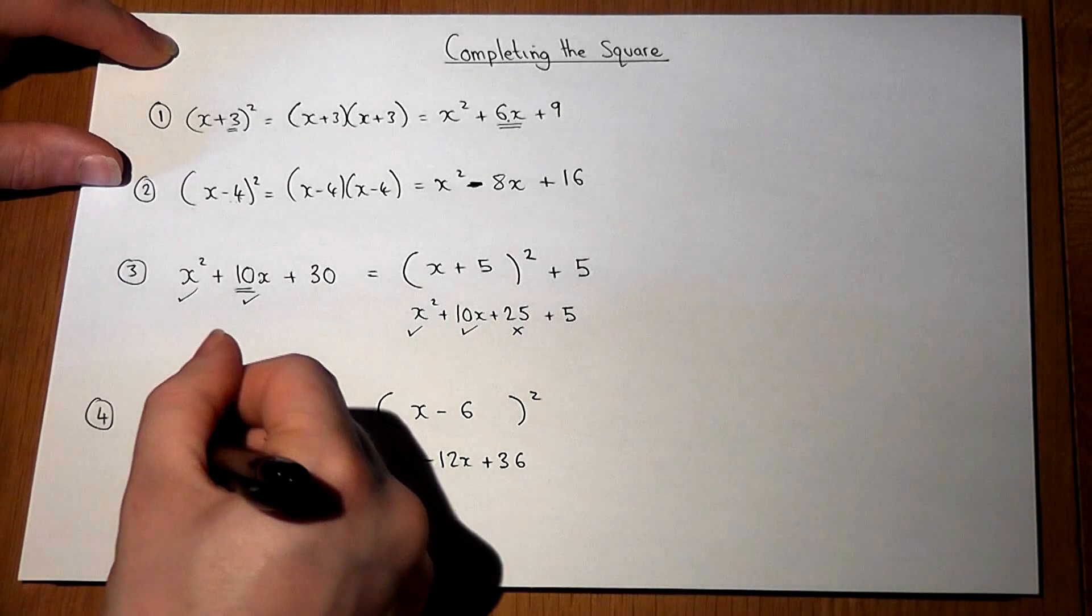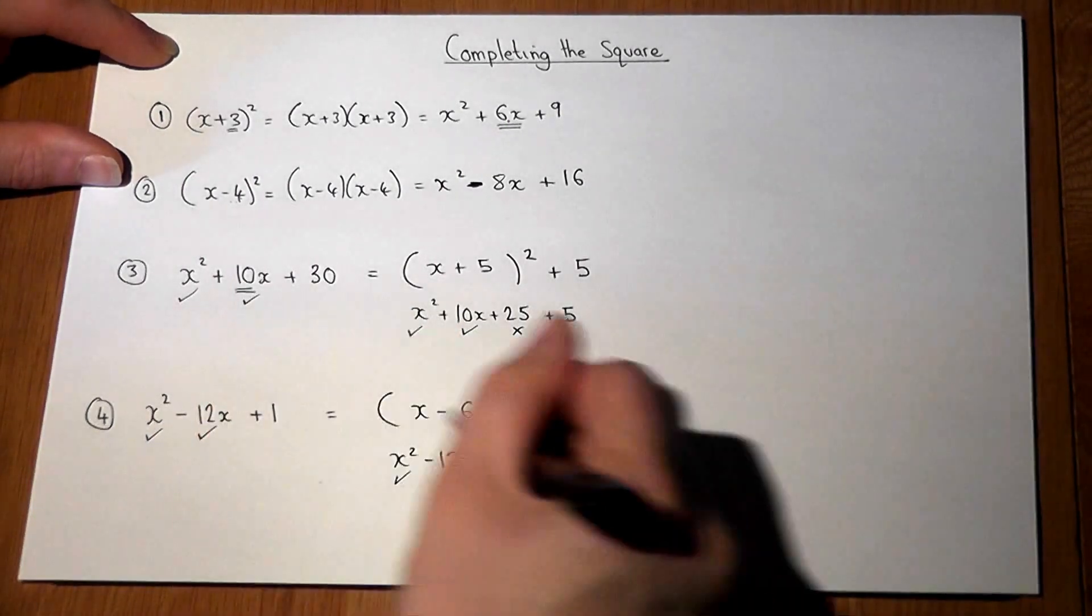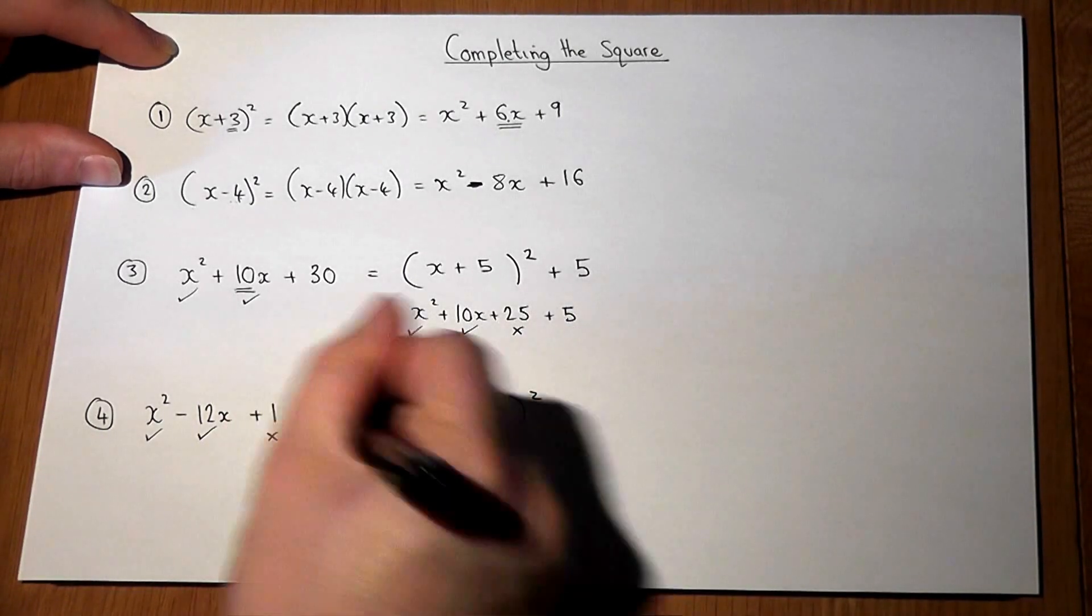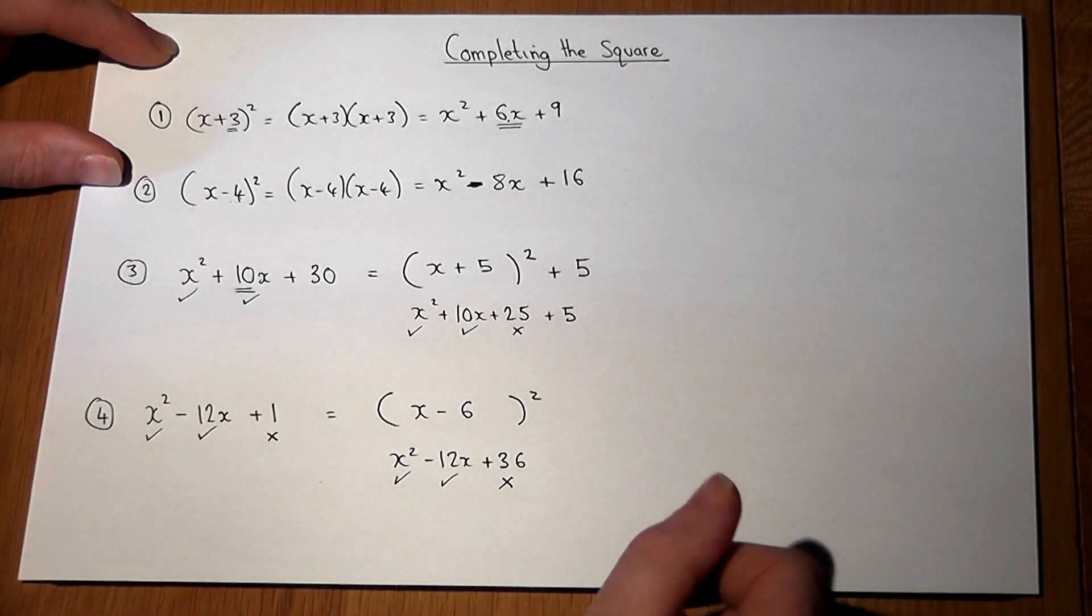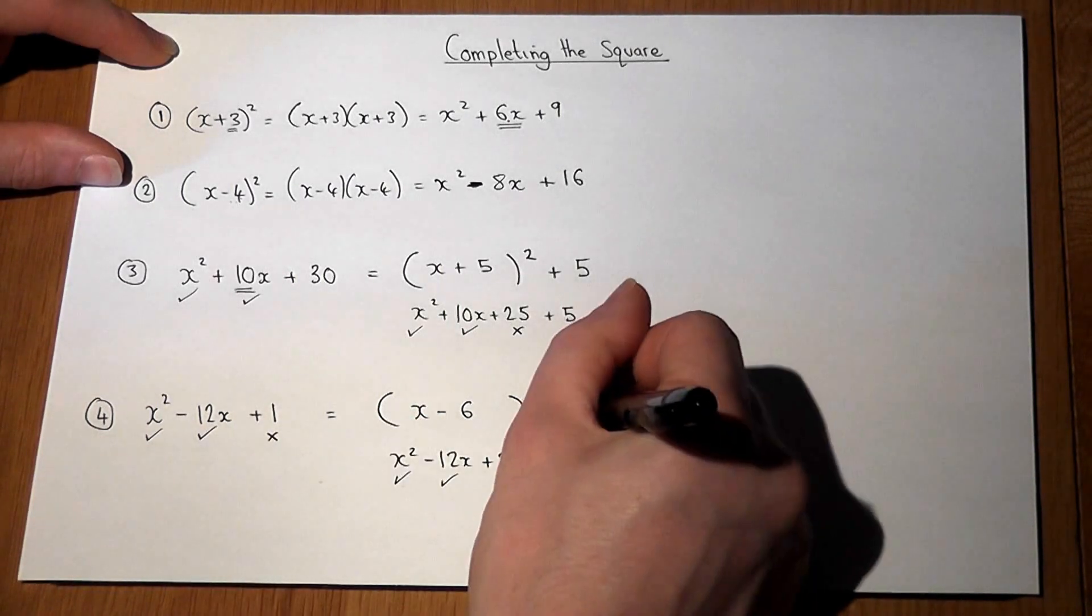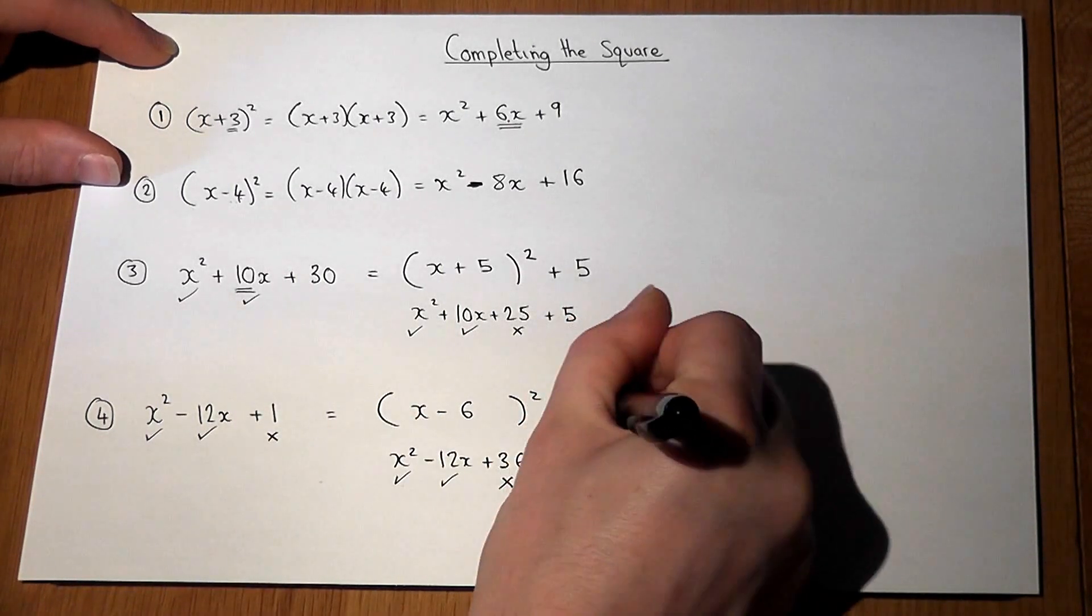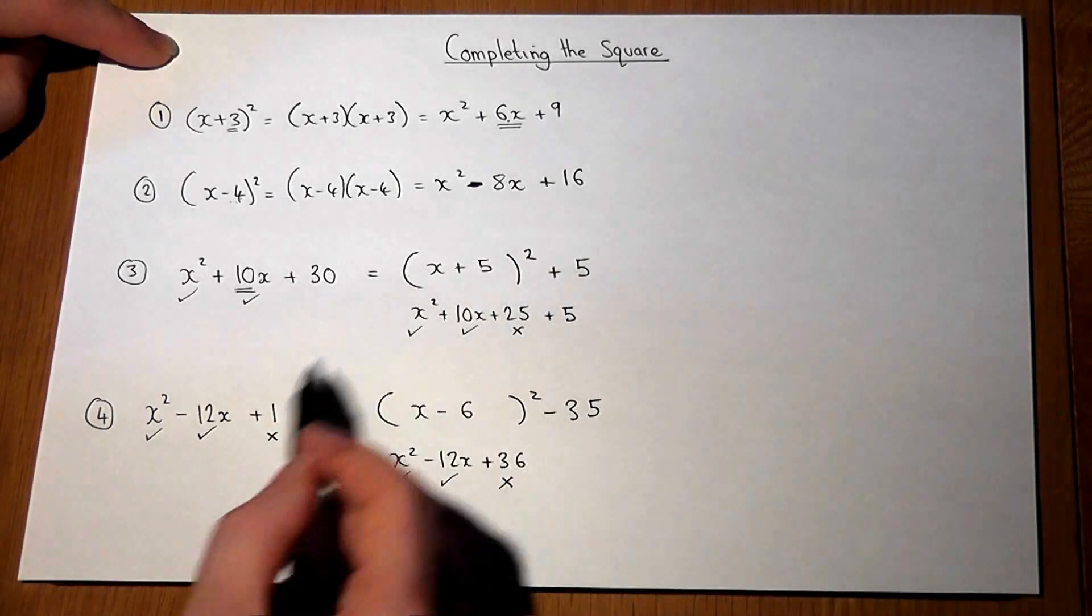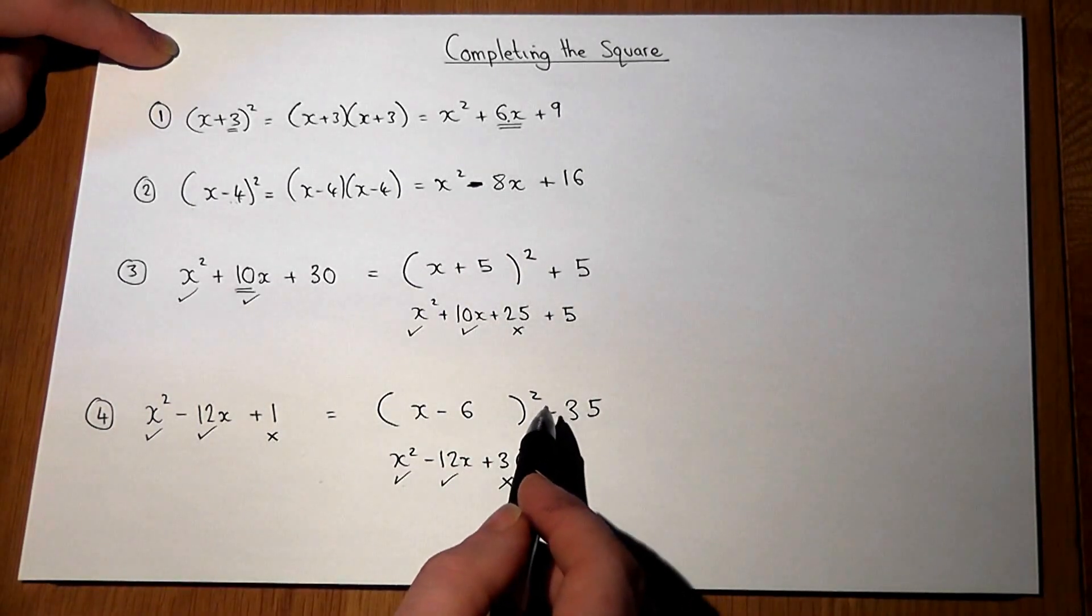The x² terms cancel off, the -12x terms do, but the 36 does not equal the 1. But to get 36 down to 1, I just have to take away 35. So again, I've completed the square for both these expressions.